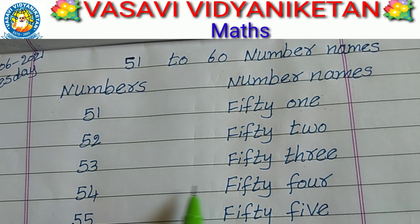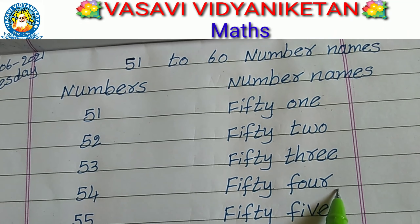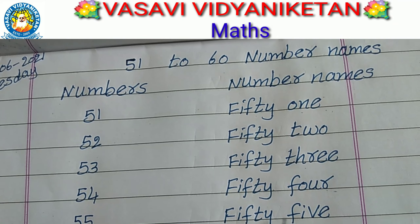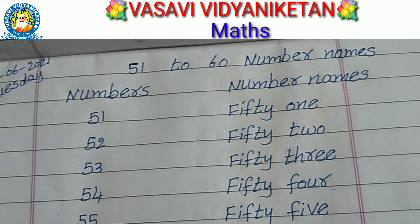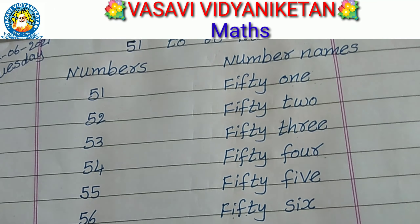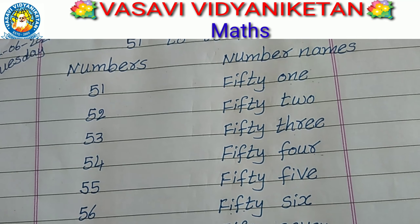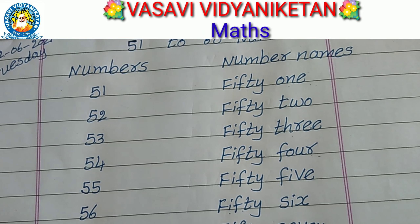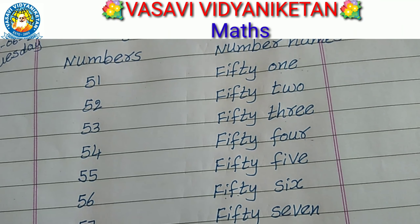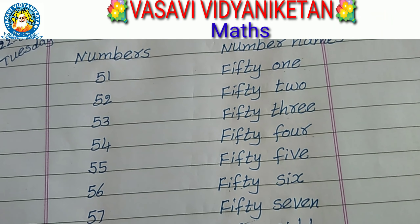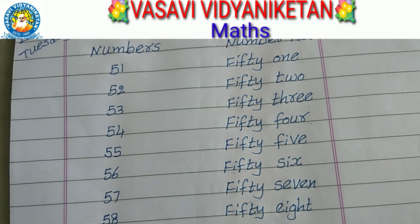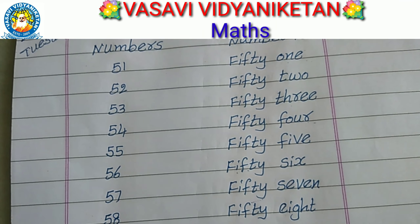Next. 54. F-I-F-T-Y F-O-U-R. 54. Next. 55. F-I-F-T-Y F-I-V-E. 55. Next. 56. F-I-F-T-Y S-I-X. 56. 57. F-I-F-T-Y S-E-V-E-N. 57. 58. F-I-F-T-Y E-I-G-H-T. 58. Next. 59. F-I-F-T-Y N-I-N-E. 59. 60. S-I-X-T-Y. 60.